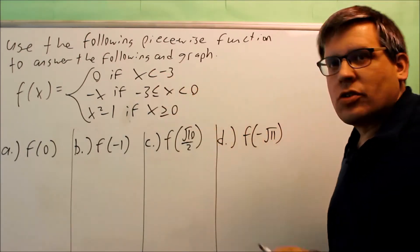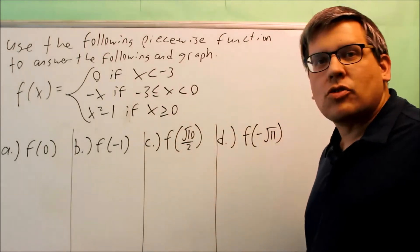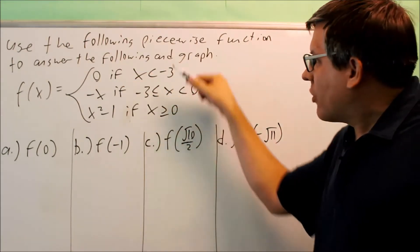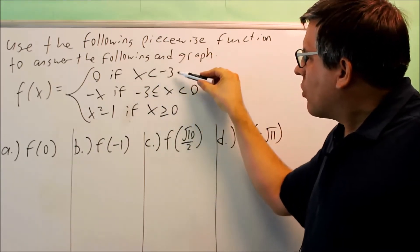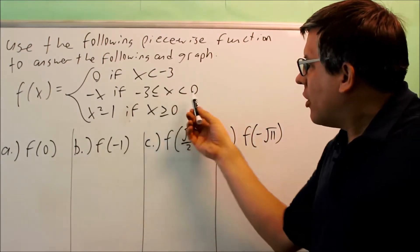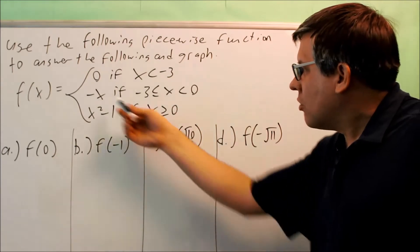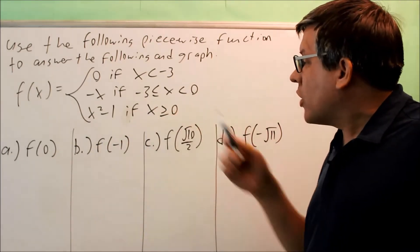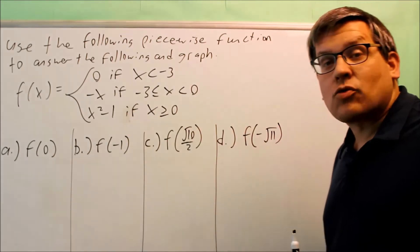For piecewise functions, you don't have to have just two expressions — you could have as many as you want. In this case, we have three of them, and we have conditions written for each one. When x is less than negative three, it's always going to be zero. If x is between negative three and zero, you use negative x. And if x is greater than or equal to zero, you use x squared minus one.